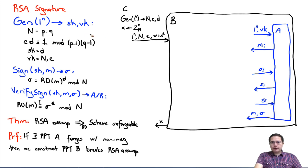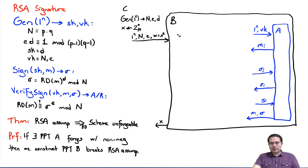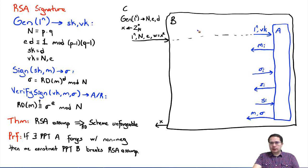We will start with simple things in this proof and then it will get complicated. The simplest thing here to start with is to send the security parameter and the verification key. We can easily forward the verification key: B sets n and e that it receives, which is actually what the adversary expects.